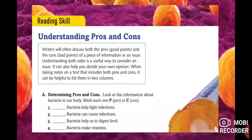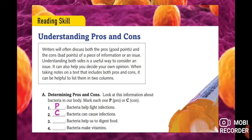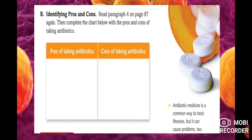Now let's determine pros and cons. We write P for pro and C for con. Number one: bacteria help fight infections — this is a pro. Number two: bacteria can cause infections — this is a con. Number three: bacteria help us digest food — this is a pro. Number four: bacteria make vitamins — this is also a pro. So numbers one, three, and four are pros, and number two is a con.